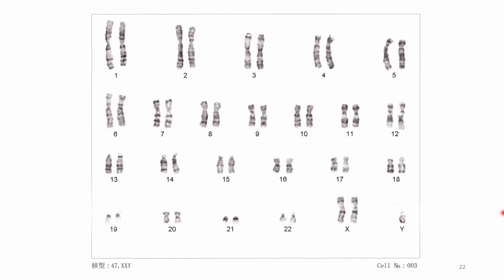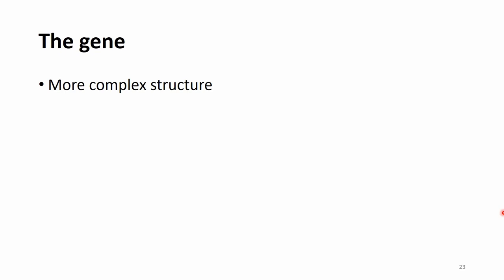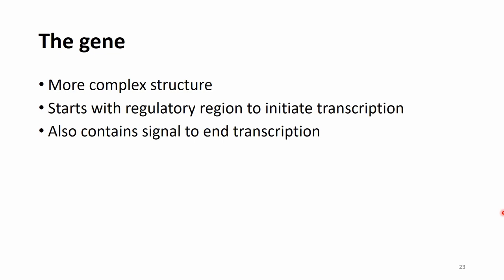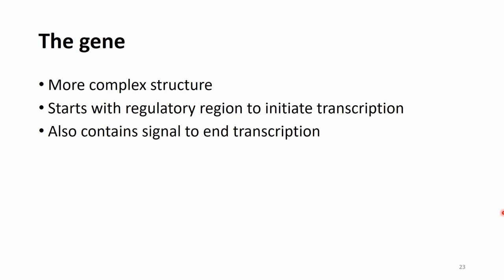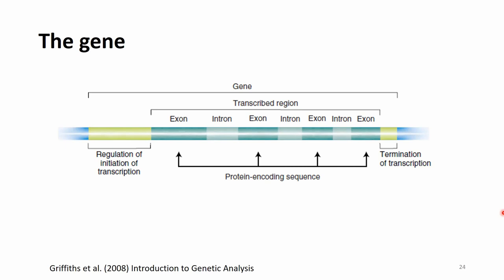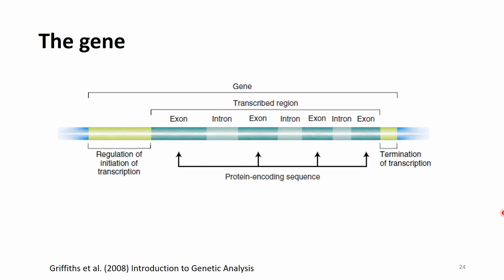From now on, we will talk about a setting with two chromosomes each. If we move into more detail on the DNA, we find places called genes — parts of the DNA with a more complex structure. This usually starts with a regulatory region to initiate transcription and also contains signals to end transcription. Generally speaking, genes produce proteins of importance to the organism.